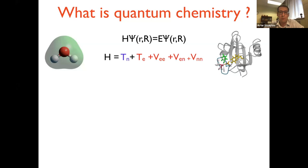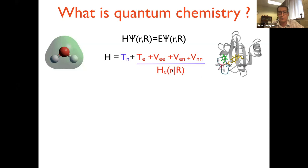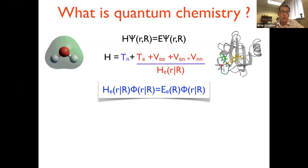The Hamiltonian for any molecule can be expressed with kinetic energy of all particles and potential energies, which are essentially Coulomb interactions between the charged particles. What is important to emphasize is that electrons are much lighter than nuclei. Therefore, what Born and Oppenheimer figured out long ago is that it makes sense to first separate the electronic Hamiltonian, where electronic variables are still treated as variables and the nuclei are treated as parameters — essentially clamping the nuclei in one position and solving the eigenvalue problem for the electronic Hamiltonian.